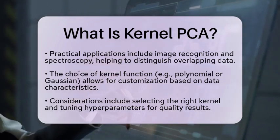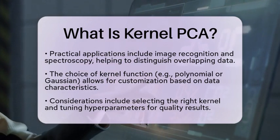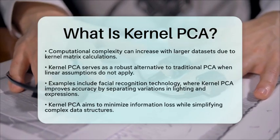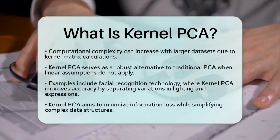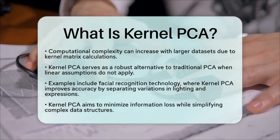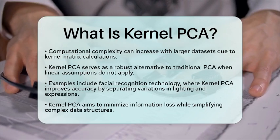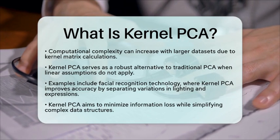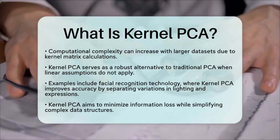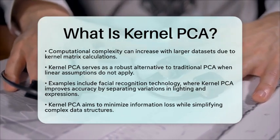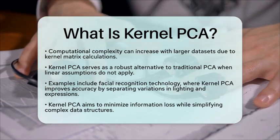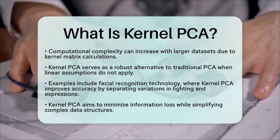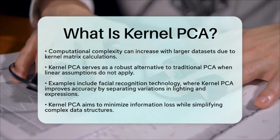In the context of principal component analysis in statistics, Kernel PCA offers a robust alternative when linear assumptions do not hold. It enables statisticians to extract features that reflect nonlinear dependencies, ensuring the components derived remain interpretable and actionable. For instance, in facial recognition technology, Kernel PCA can effectively separate variations in lighting and facial expressions by mapping pixel intensities into a space where identity-related features become distinguishable, improving recognition accuracy compared to traditional methods.